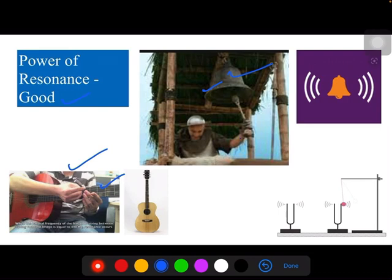If you consider tuning forks A and B which are placed nearby, if you hit tuning fork A by a ball, then it vibrates with some frequency. But because of this resonance effect, tuning fork B also vibrates at the same frequency as that of A.